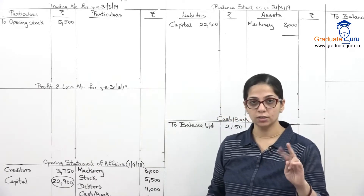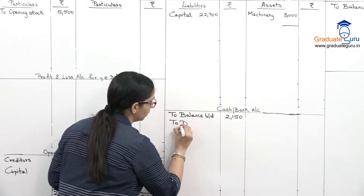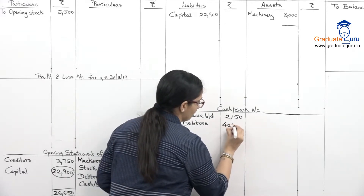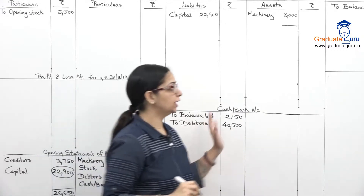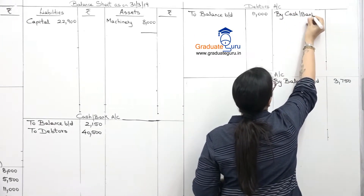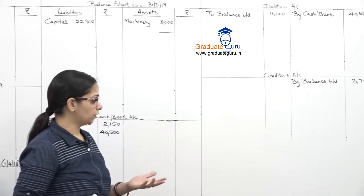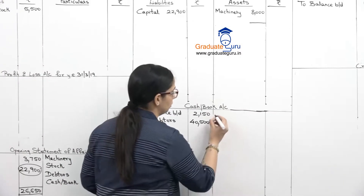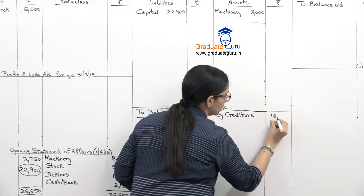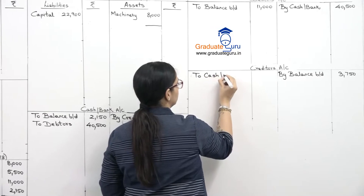Now cash transactions. Receipt from dators 40,500 — debit side of cash bank as to dators; second effect in dators account credit side as by cash bank 40,500. Payment to creditors 18,000 — credit side of cash bank as by creditors; second effect in creditors account debit side as to cash bank 18,000.